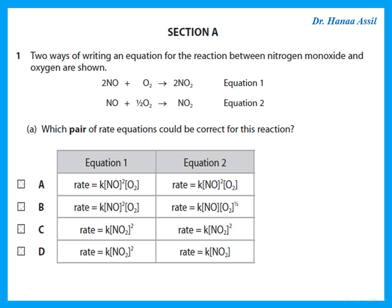The first question says two ways of writing an equation for the reaction between nitrogen monoxide and oxygen are shown. Which pair of rate equations could be correct for this reaction? You should remember that rate equations include concentrations of reactants, not products. Options C and D write the rate equation with respect to the product, so these are wrong.